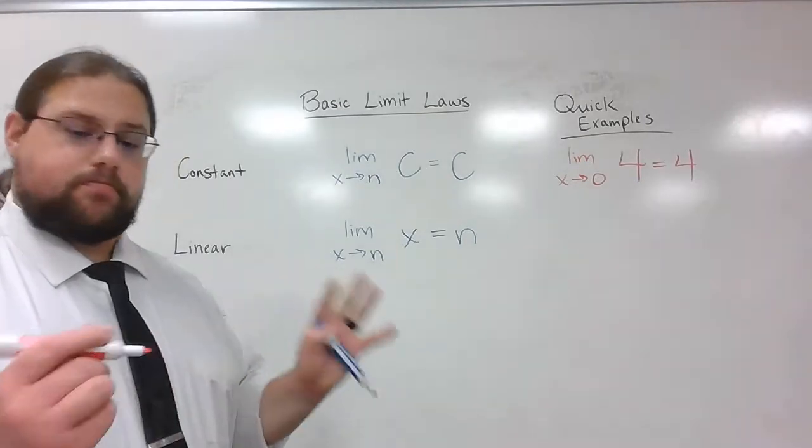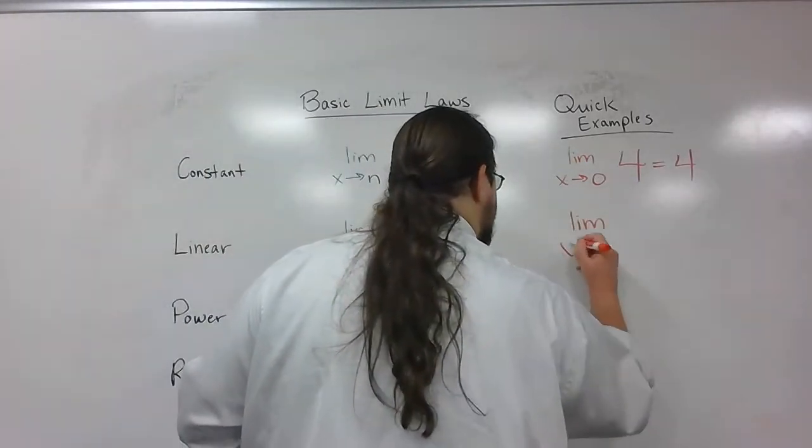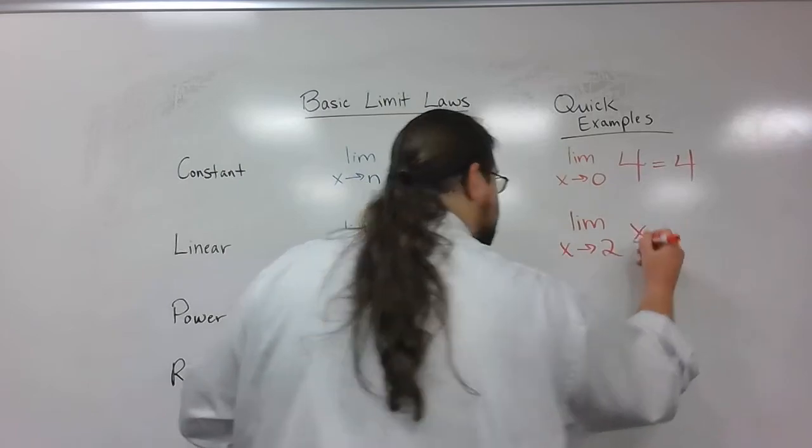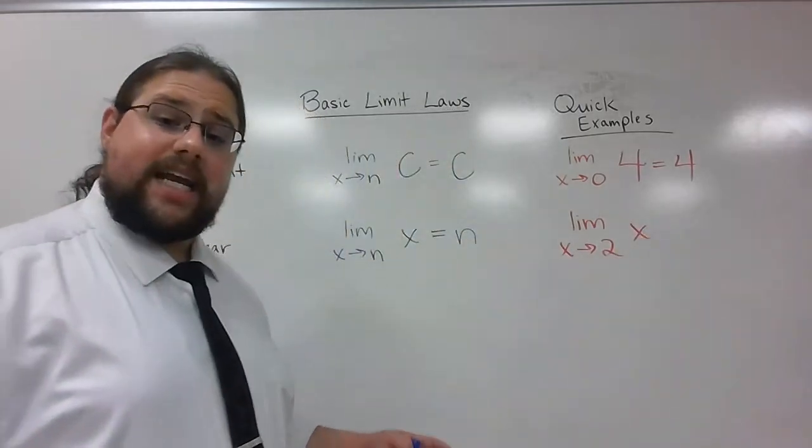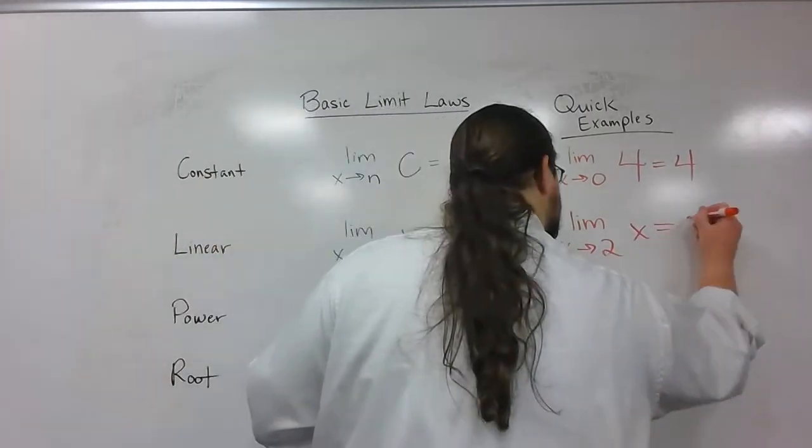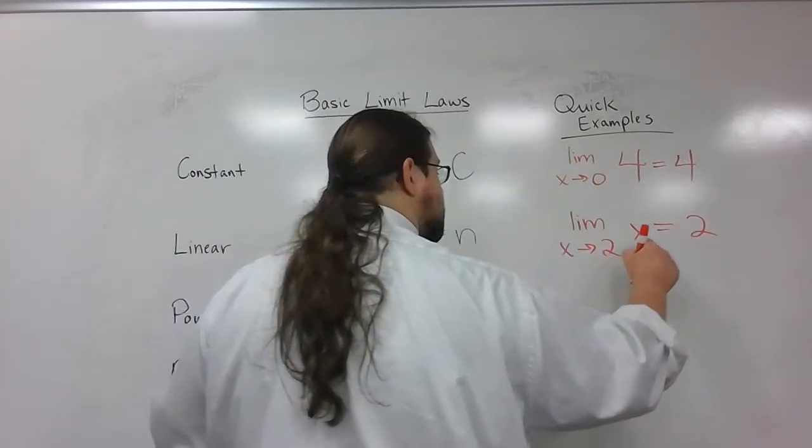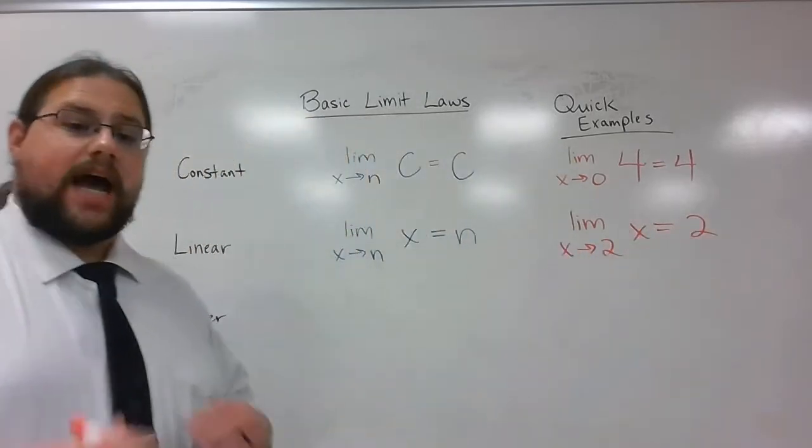Let me get a brief example. If I try to take the limit as x approaches 2 of just x, well, all I'm going to get is 2. All I have to do is plug 2 in. That's it.